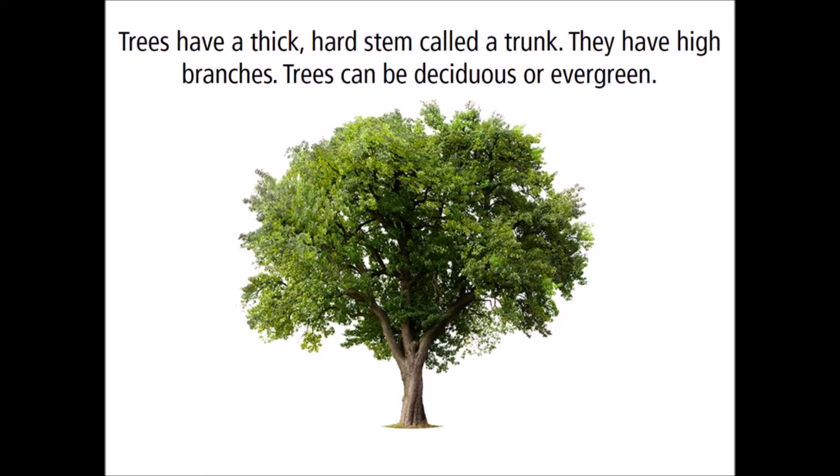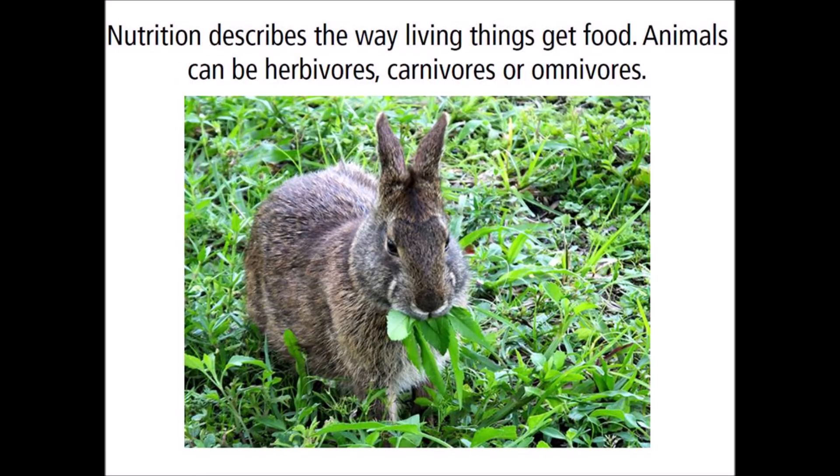Trees can be deciduous or evergreen. Nutrition describes the way living things get food. Animals can be herbivores, carnivores or omnivores.